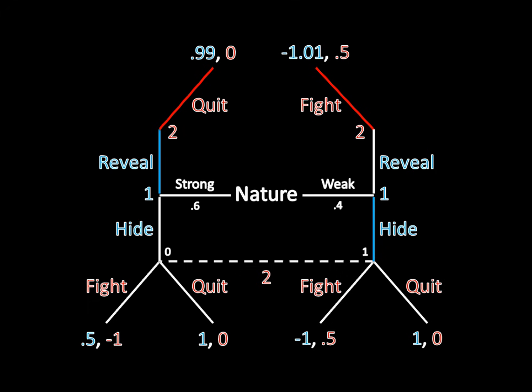But in this assumed or proposed equilibrium, only the weak type of Player 1 chooses to hide. So, conditional on reaching the hide information set, the only way Player 2 can have gotten here is if Player 1 was weak and chose to hide. Player 1 as the strong type never chooses to do that.